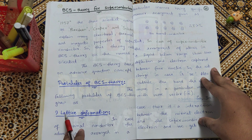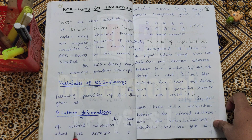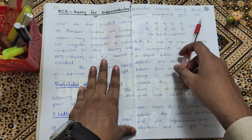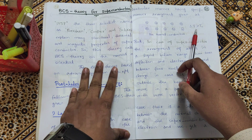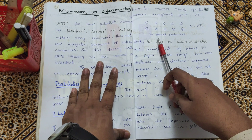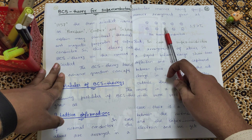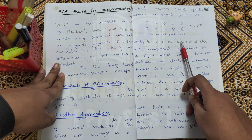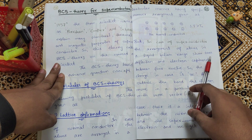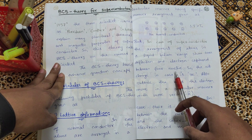The postulates of BCS theory are as follows. First: lattice deformation. In the case of a normal conductor, the atoms are arranged in a particular manner with a specific arrangement. In a normal conductor, when temperature T is greater than Tc (critical temperature), the atoms have a specific arrangement. But in the case of a superconductor, in the liquid helium range, the arrangement of atoms shows some deflection.